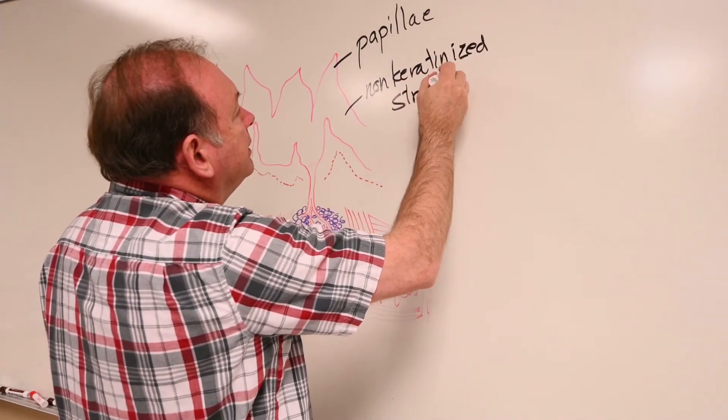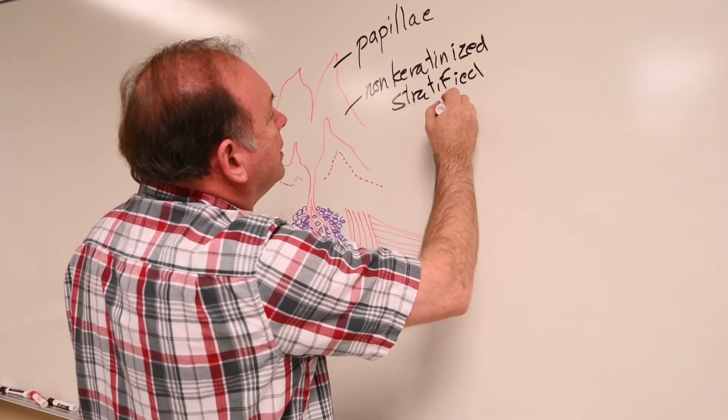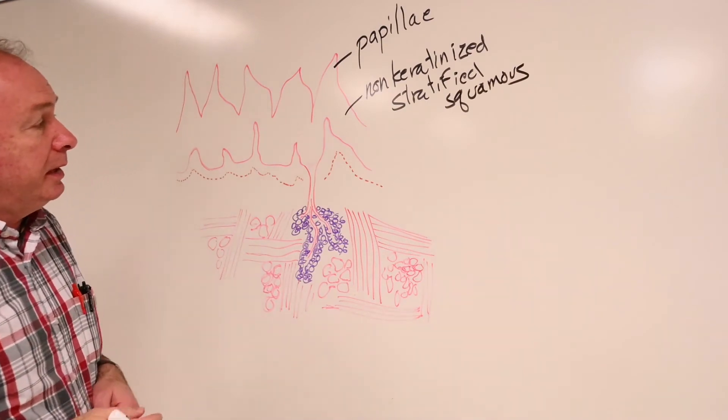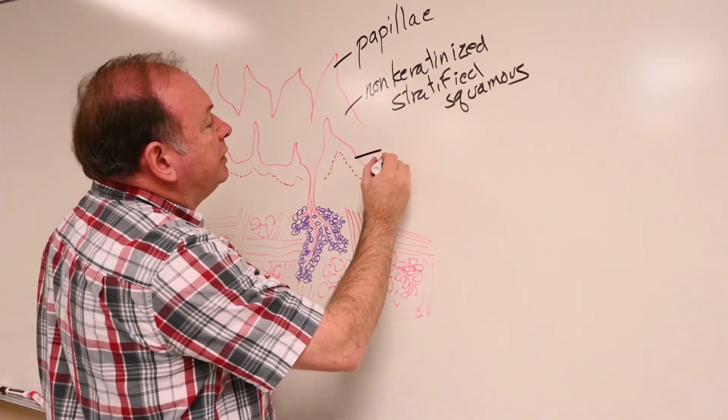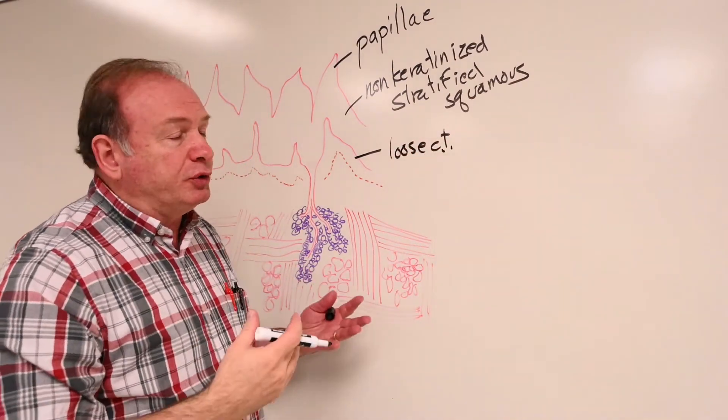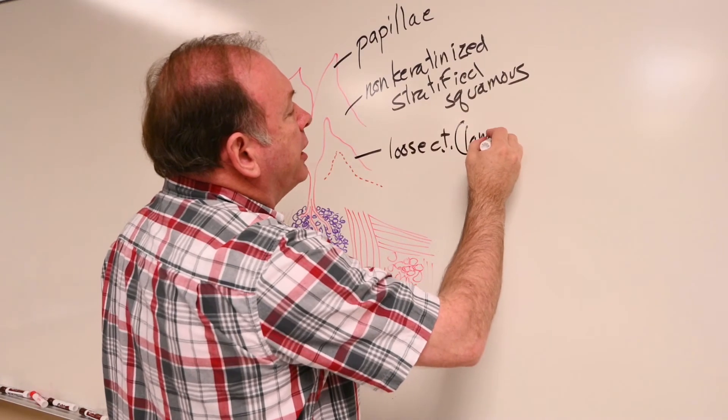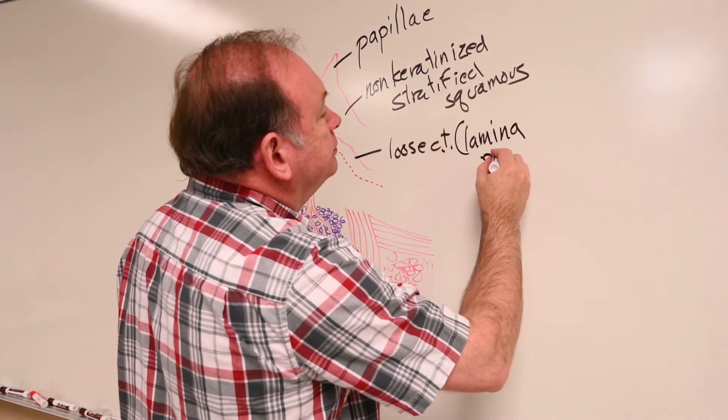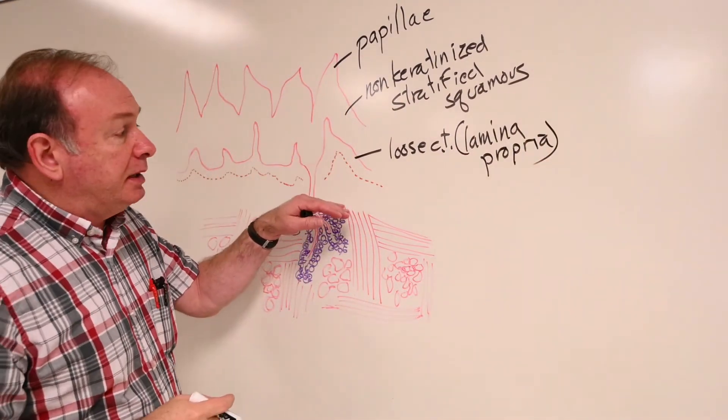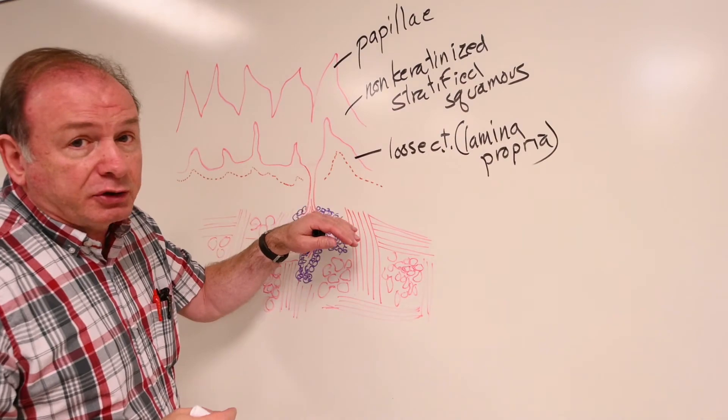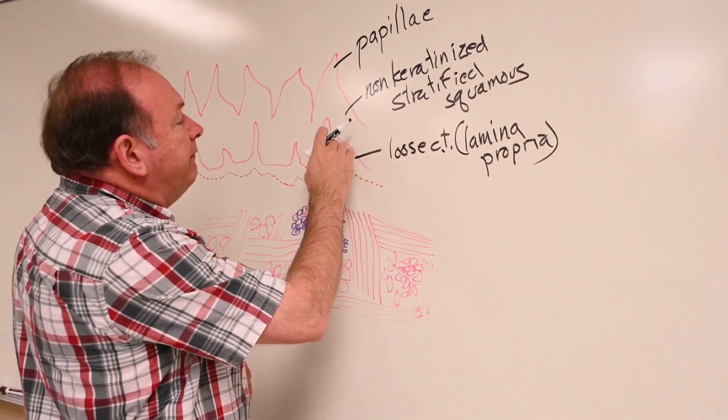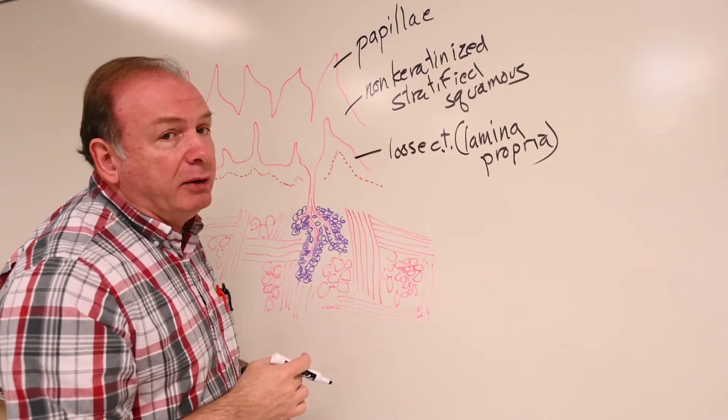It rests on a little bit of loose connective tissue. In a mucous membrane, we can refer to that as a lamina propria. But this really resembles the dermis layers quite a bit from the skin. So that's very much like the papillary layer of your dermis.